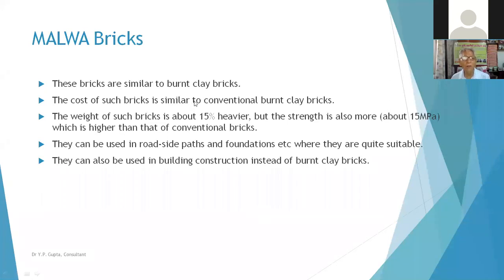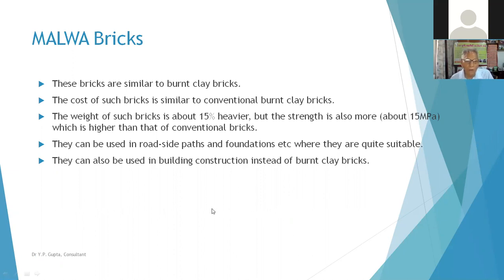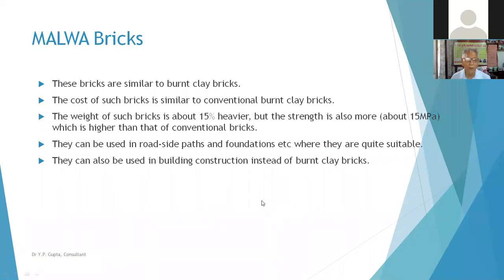The use of these bricks is similar to burnt clay bricks. The cost is similar to conventional burnt clay bricks, or even less if produced at mass scale. The weight is about 15 percent higher but the strength is also more — around 15 MPa — which is much higher than conventional bricks, which reach only 8 or 9 MPa. They can be used in road pavement foundations and construction of buildings as a substitute for burnt clay bricks. ACC has also developed fly ash bricks similarly.